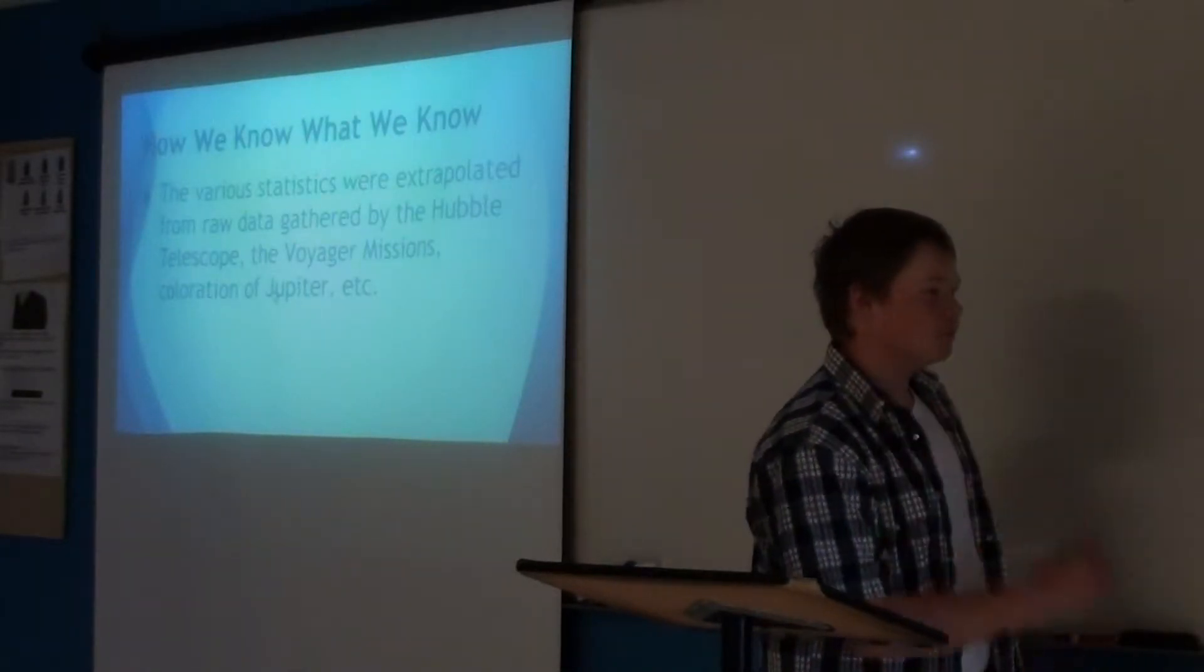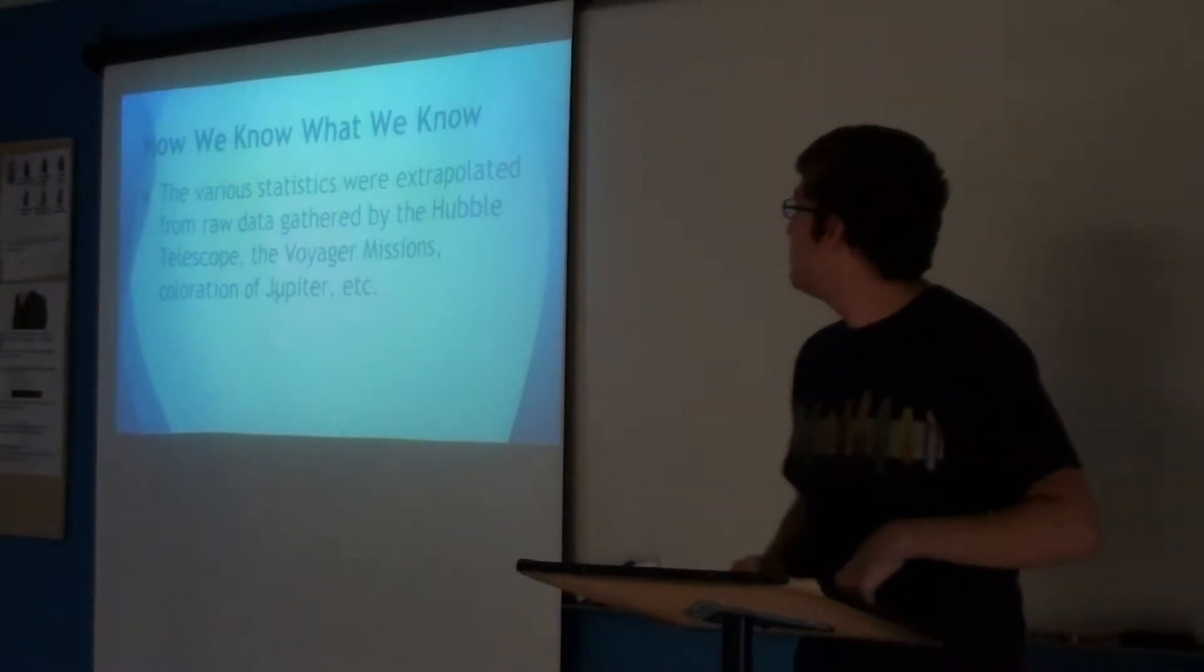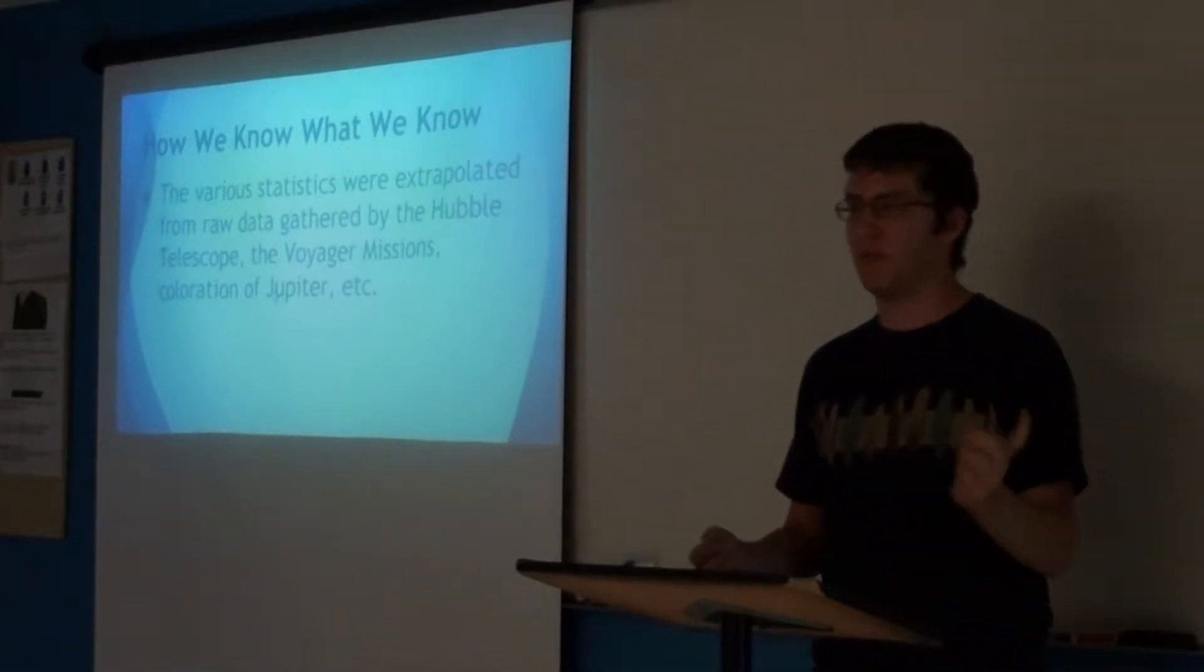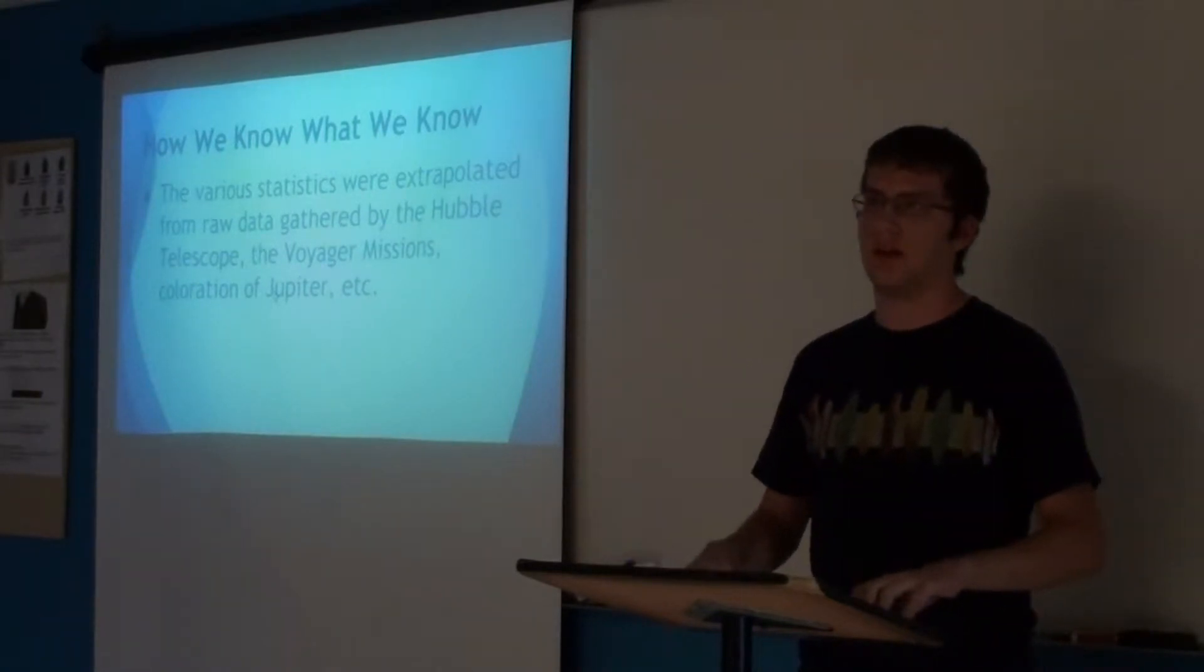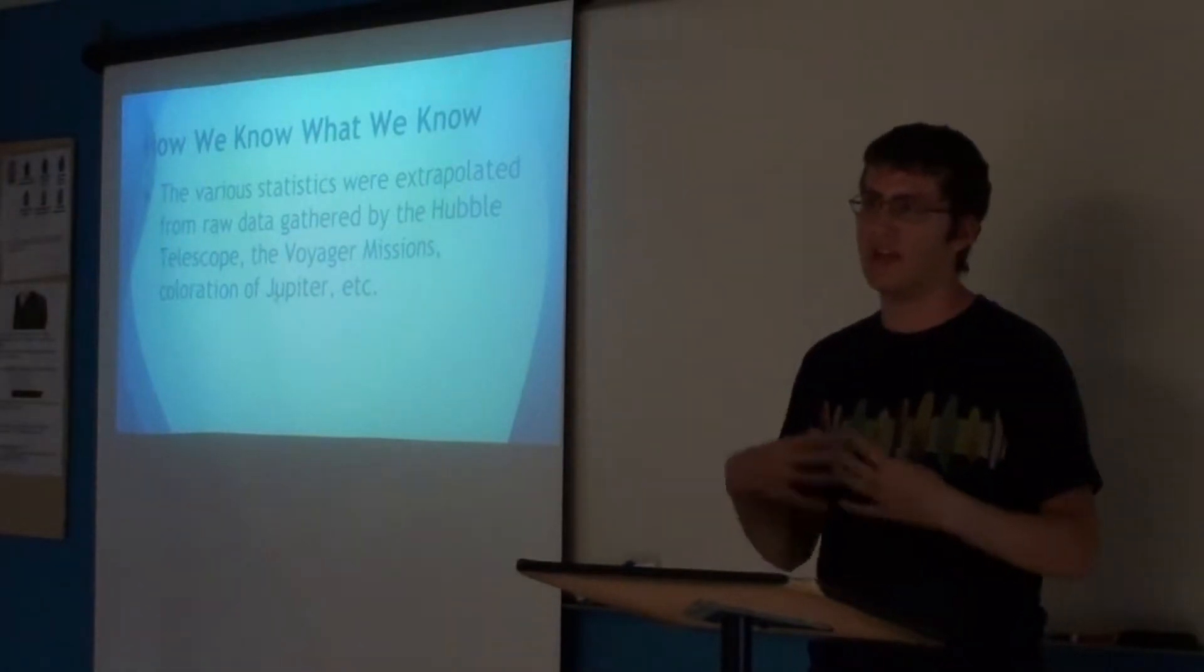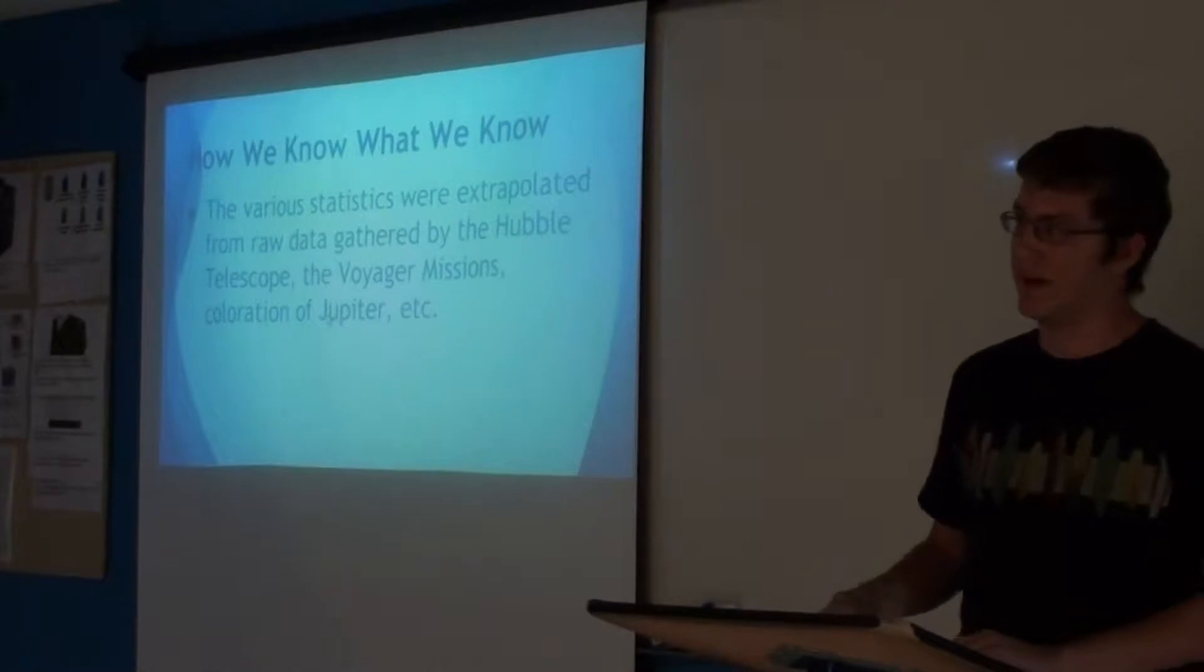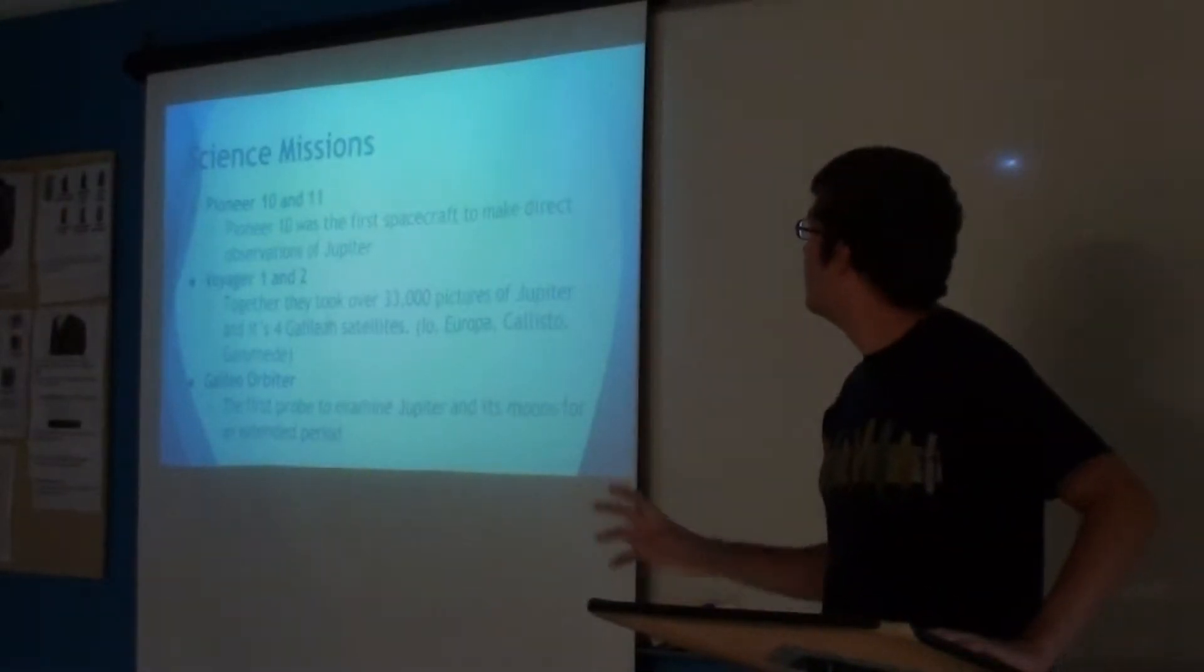So I'll take this one. Well, everything was basically gathered from probes and just by making observations of Jupiter. Like the different bands, the colors, you can use those to determine what they're made of. Like, I believe hydrogen glows at a reddish color when you look at it, and helium is more orange, as you can tell from looking at Jupiter through a giant telescope.